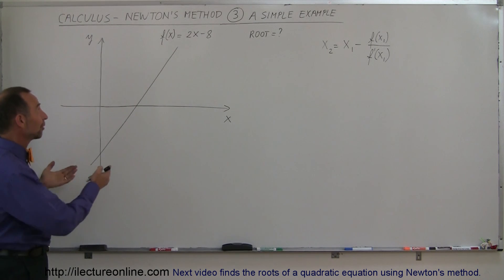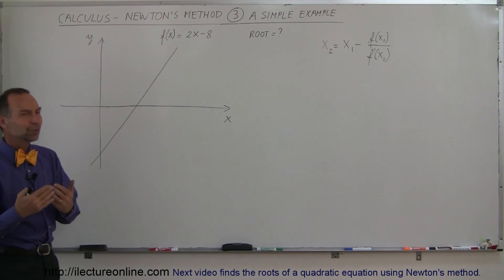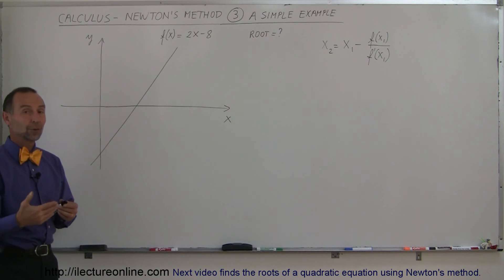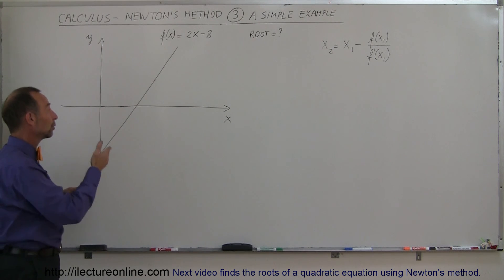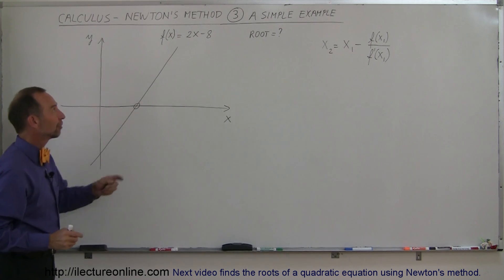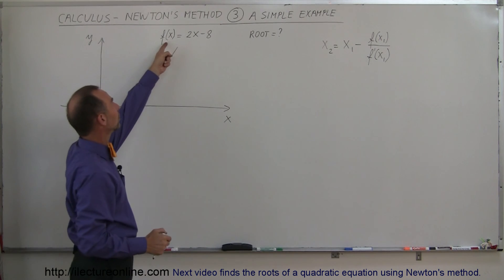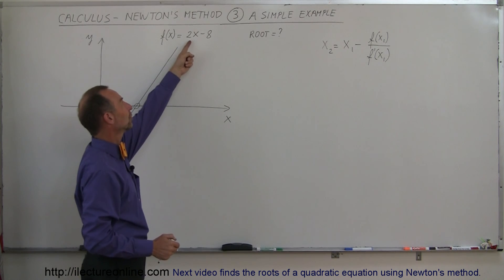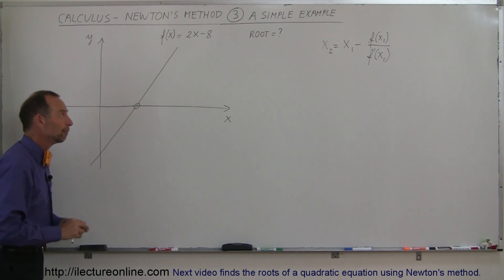So here we have a simple function, f(x) = 2x - 8, and most people that know algebra would not have any problems finding the root, finding the place where the function would equal 0. Of course that's right here, and if you look at this equation, set y equal to 0, solve for x, and you see that when x is equal to 4, 4 times 2 is 8, 8 minus 8 is 0, that's when y would be 0.